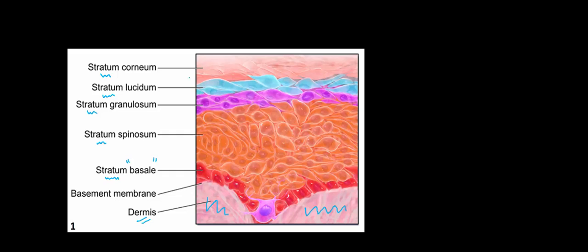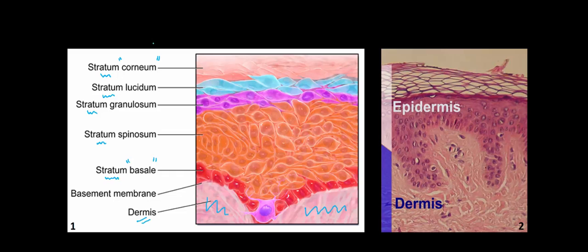At the very top, the most outermost layer of the epidermis facing the outside world is the stratum corneum. For comparison, I wanted to include alongside this an actual H&E, or hematoxylin and eosin stain of the epidermis and dermis, so you can see what each of these layers looks like.